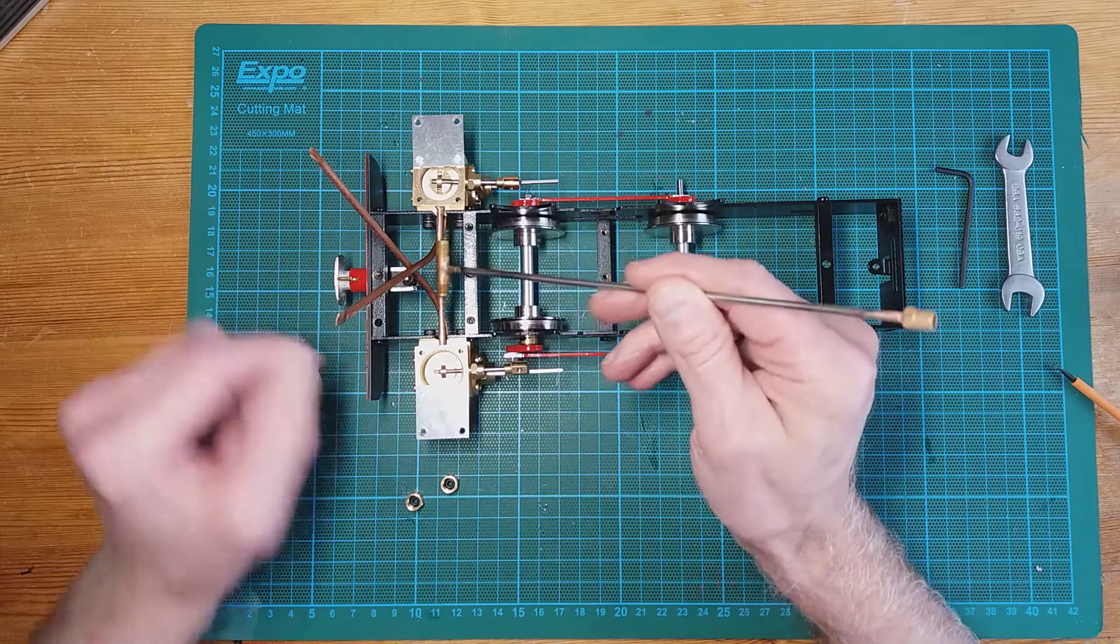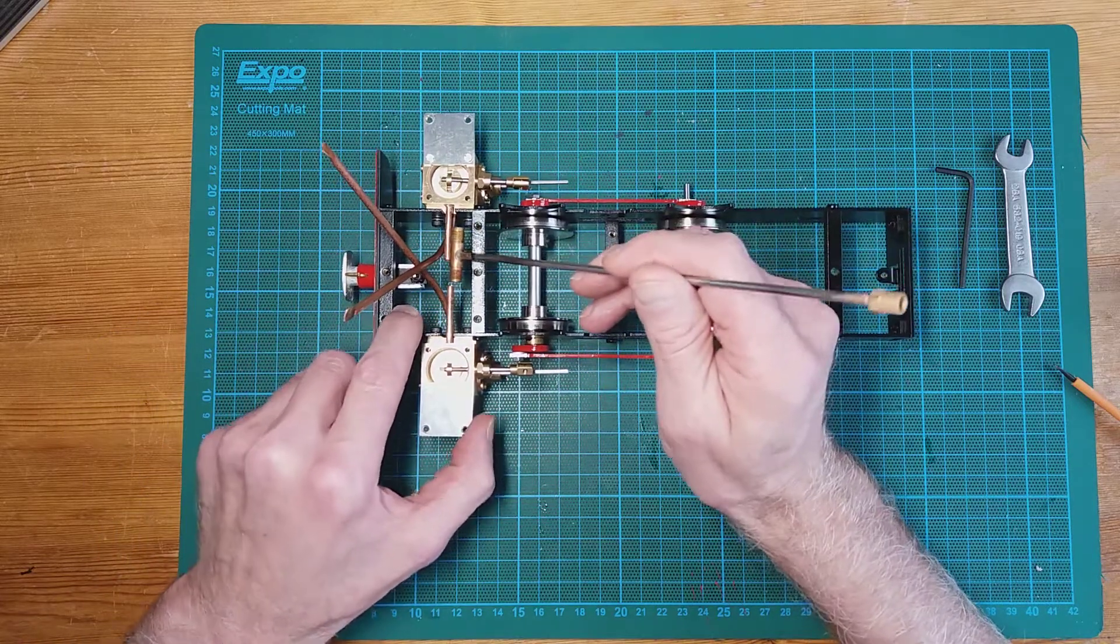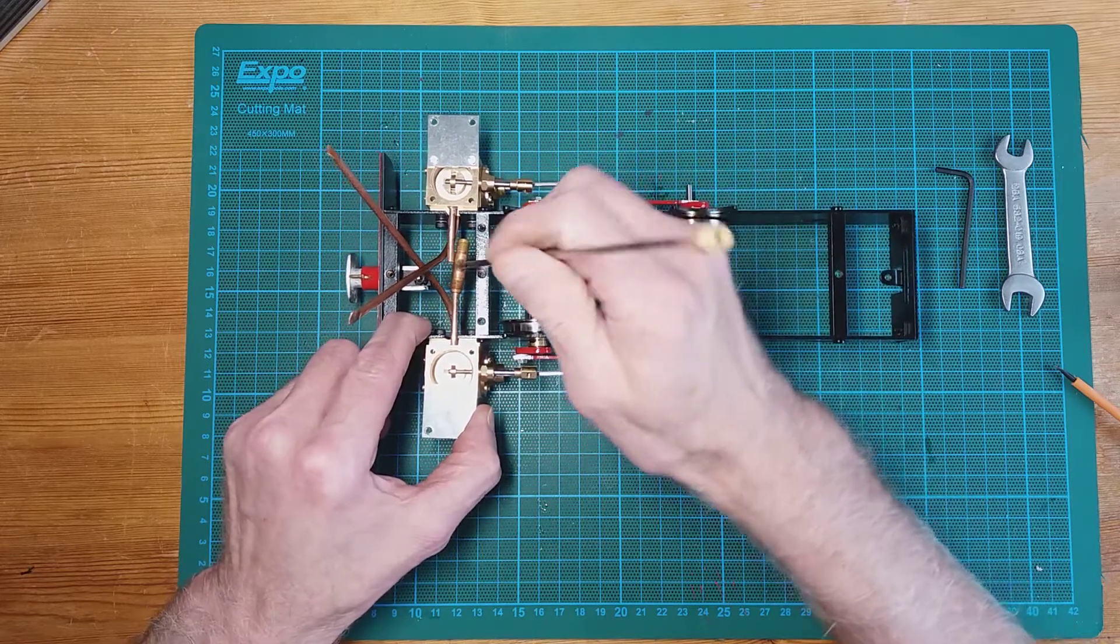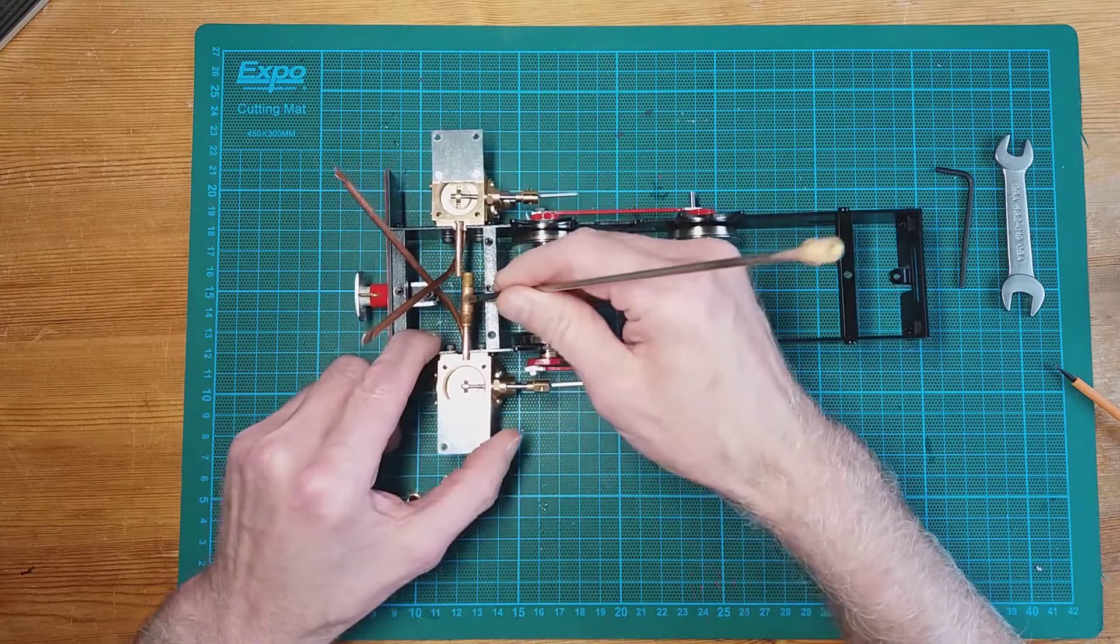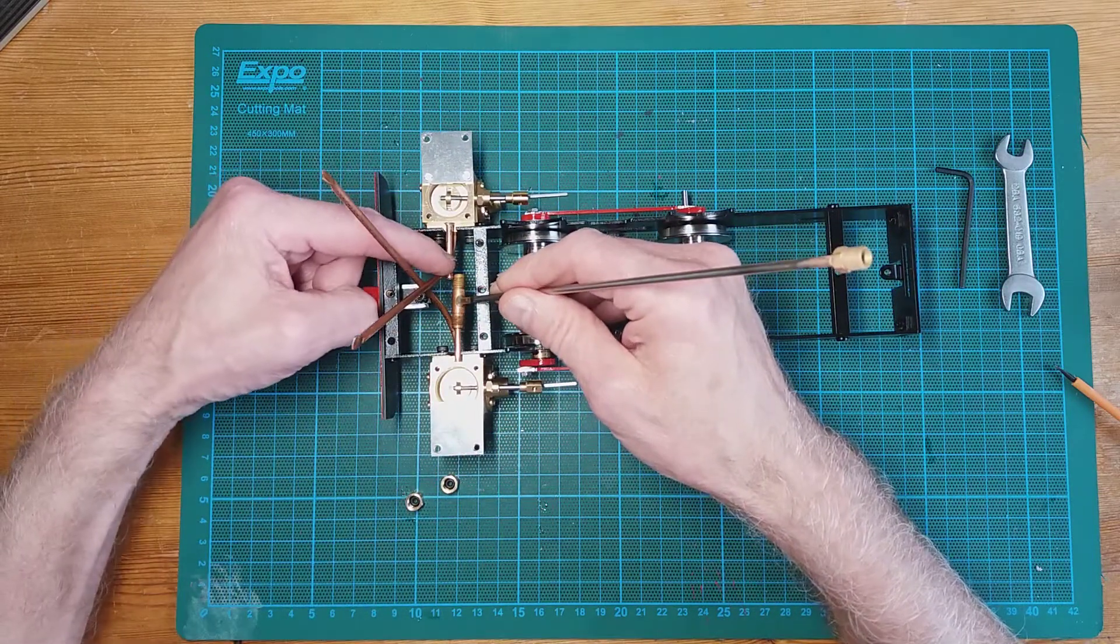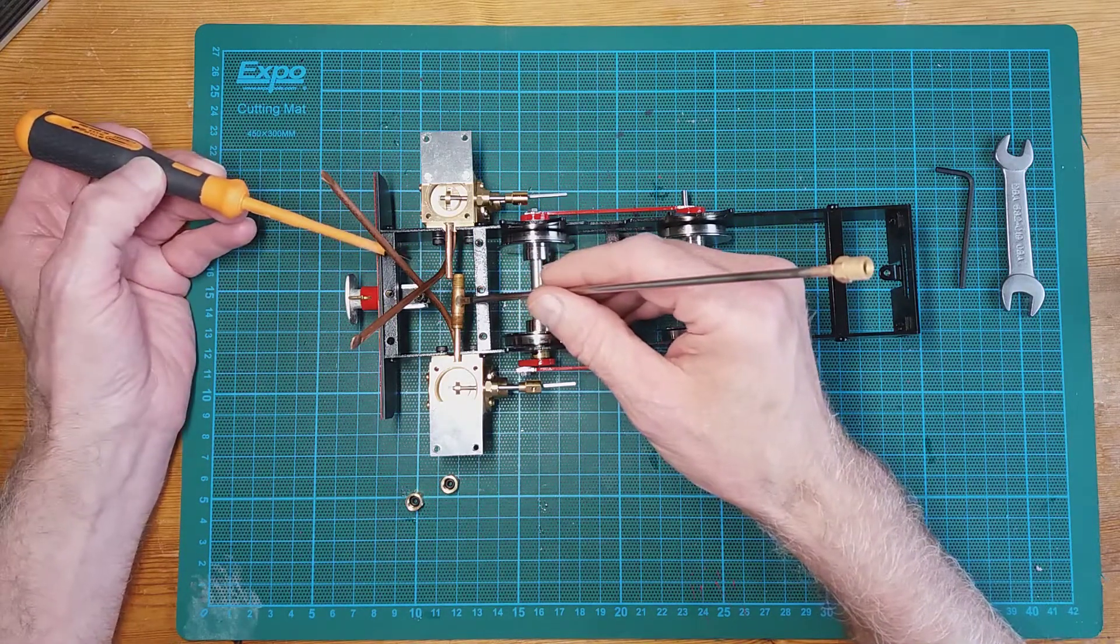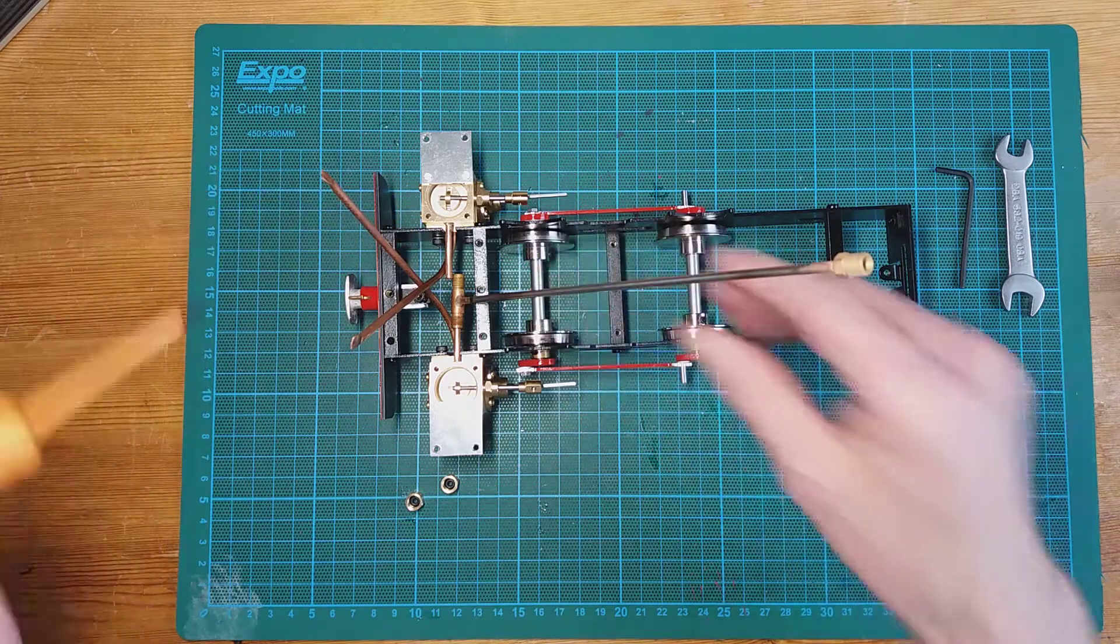You can't put the pipe all the way through. I have tried it. If I try and fit the pipe, it only goes so far and I haven't got enough room on the other side to fit it. In the instructions they talk about bending the pipe, but I don't think I'm going to do that.